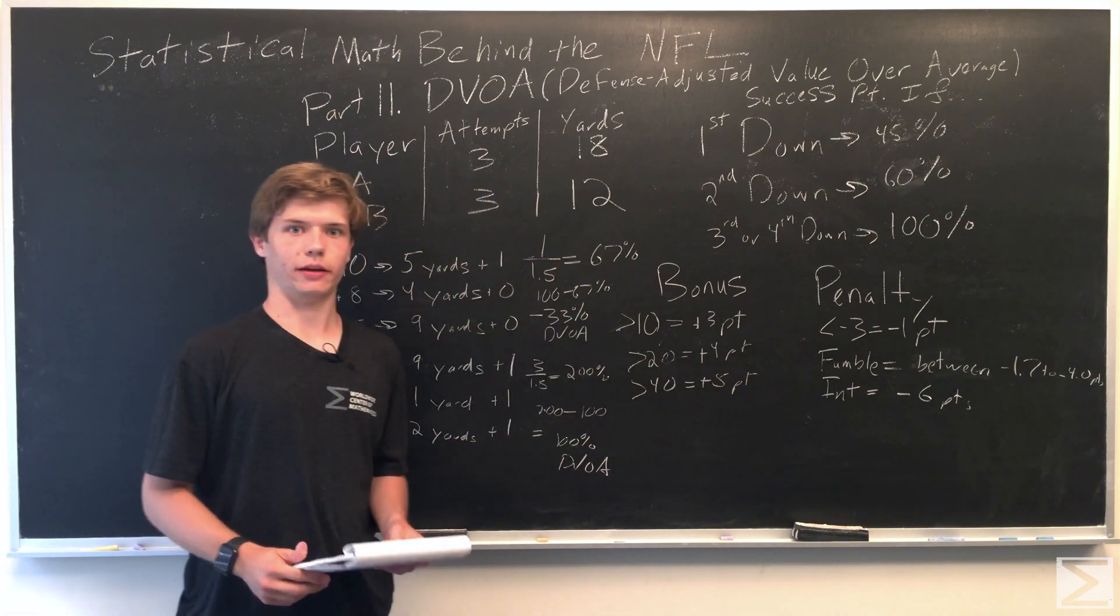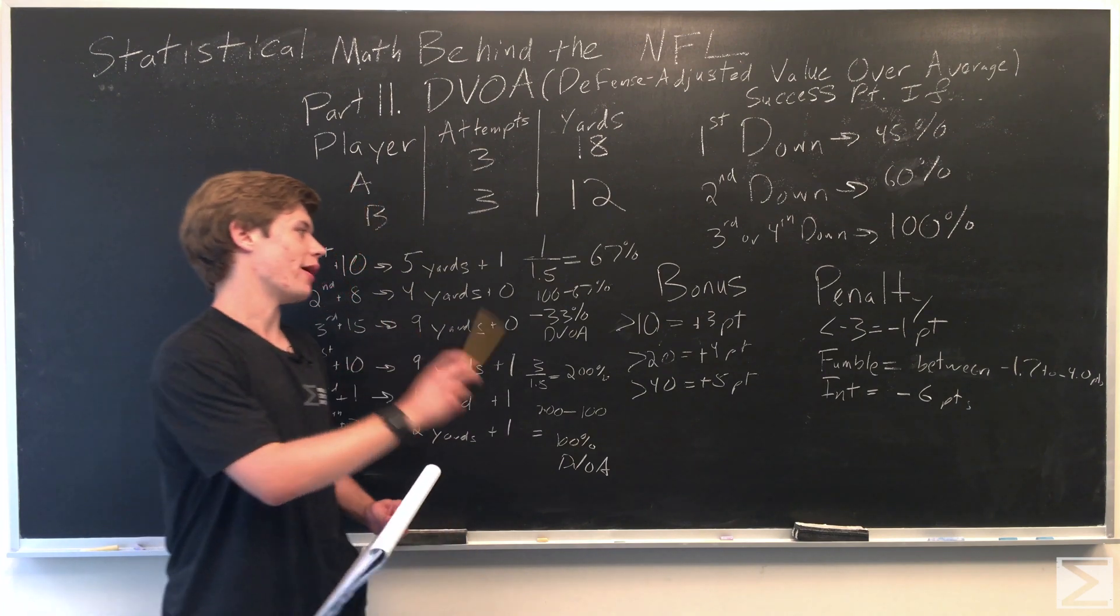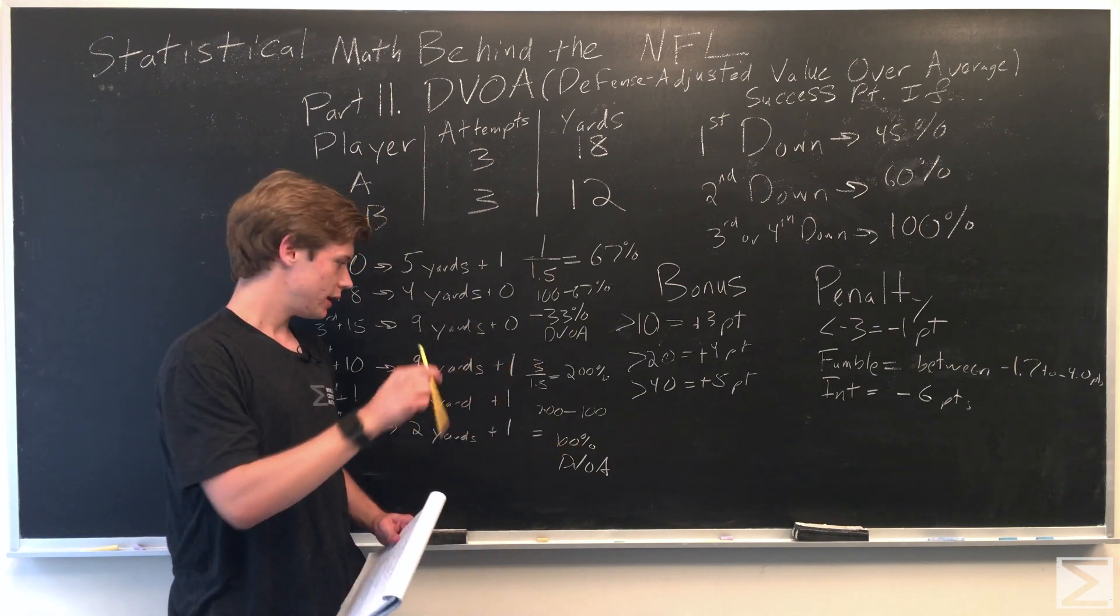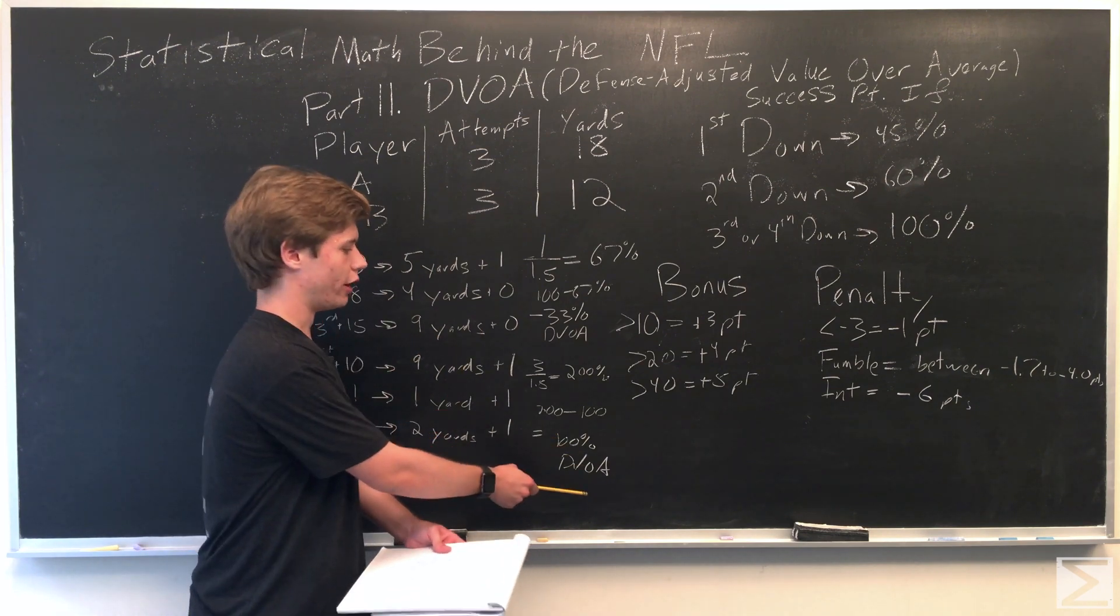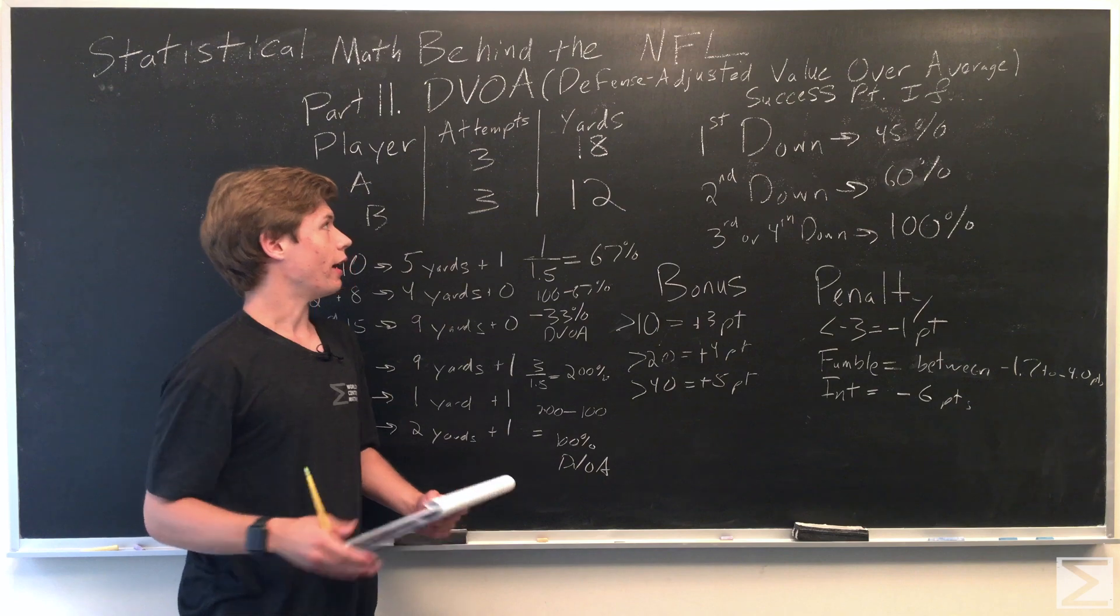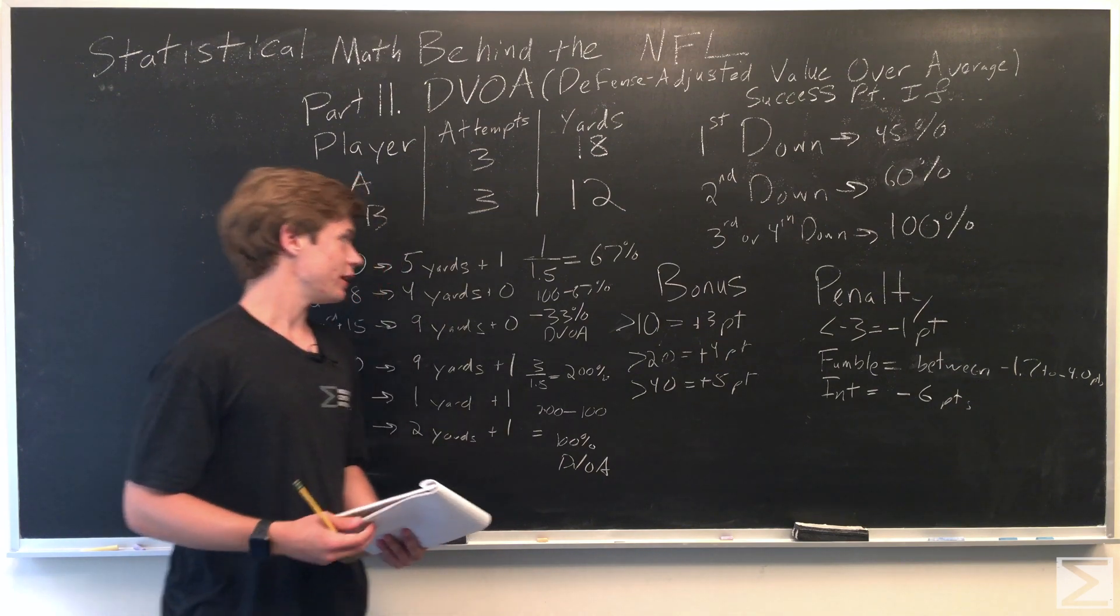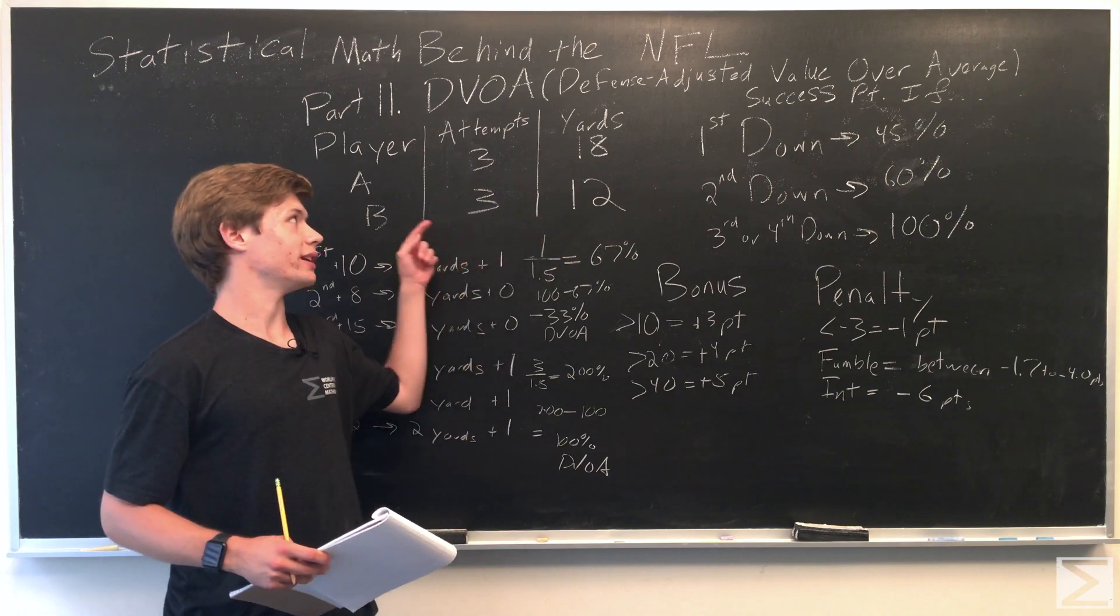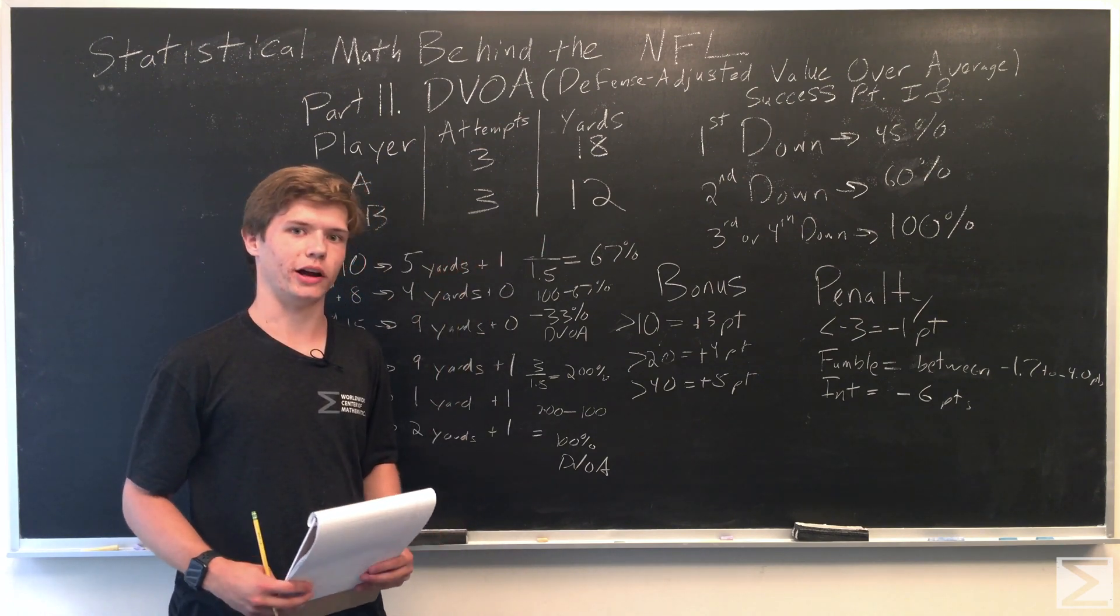So you can see just from some basic math that player one has a DVOA of negative 33% and player B has a DVOA of 100% positive. Since positive numbers are better, we see that even though his raw totals aren't quite as high as player A, player B does better depending on the situation.